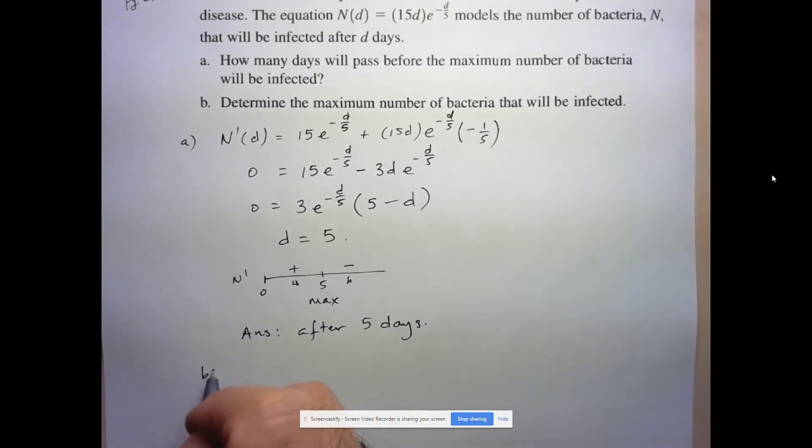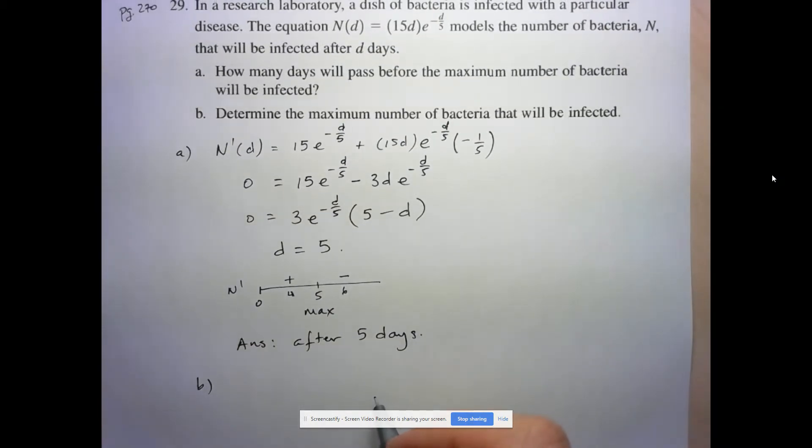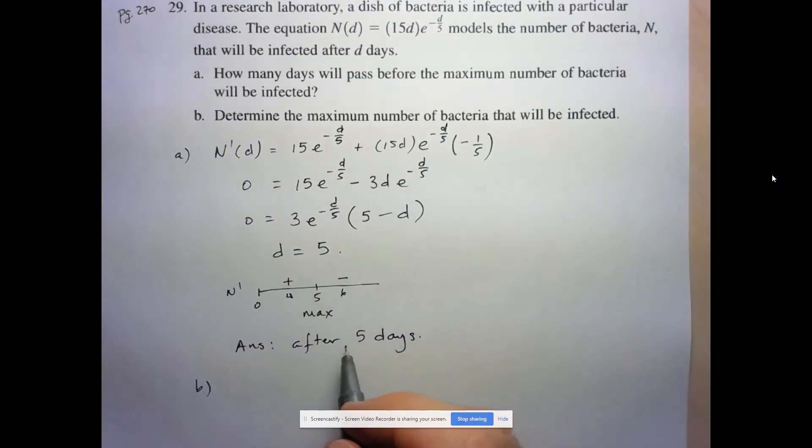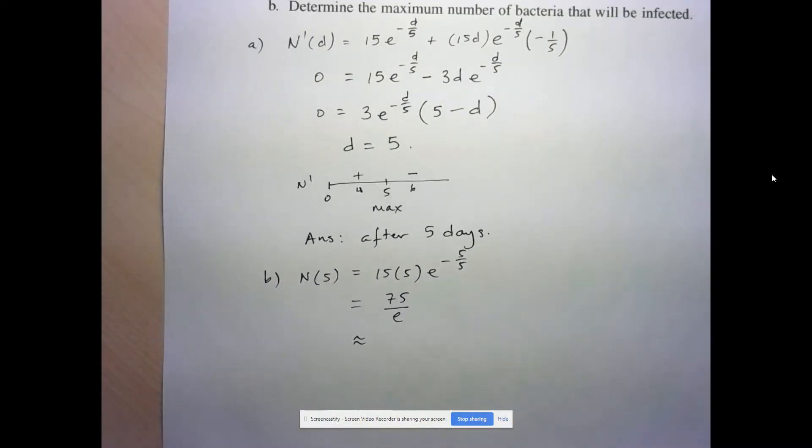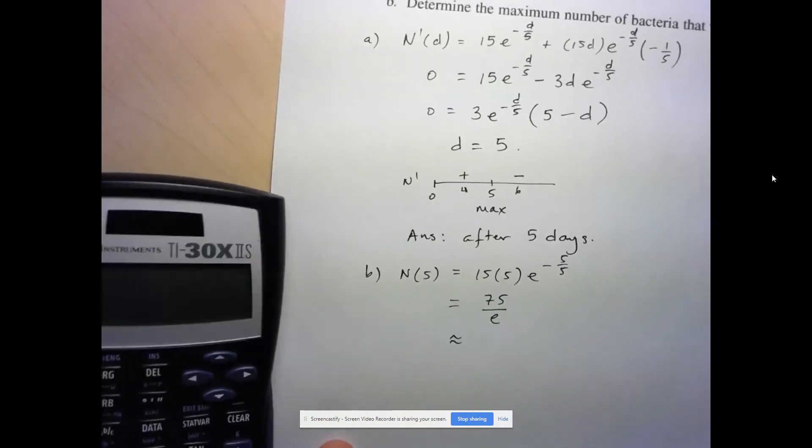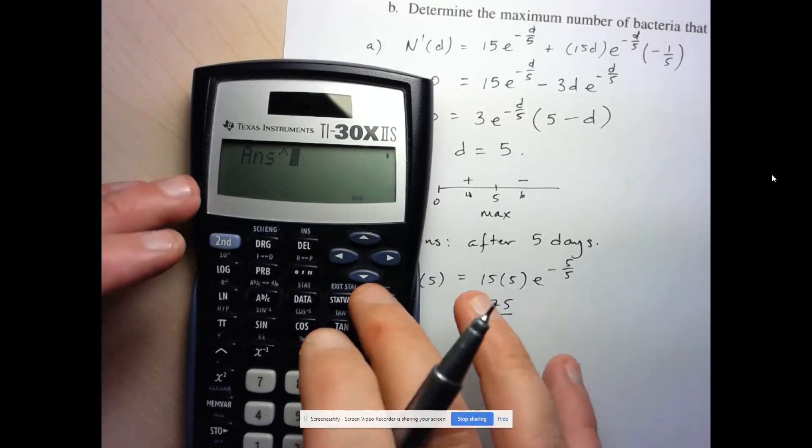And now let's answer B. They want to know, determine the maximum number of bacteria that will be infected. Well, we'll just take our answer and put it into the original equation. So we're looking for N at 5. So that's 15 times 5 times E to the negative 5 over 5. So this is going to be 5 times 15 is 75, and this is going to be E to the negative 1, so divided by E. So we're going to approximate that.